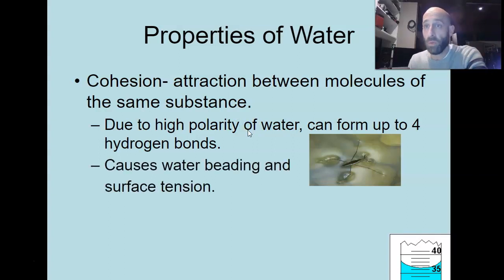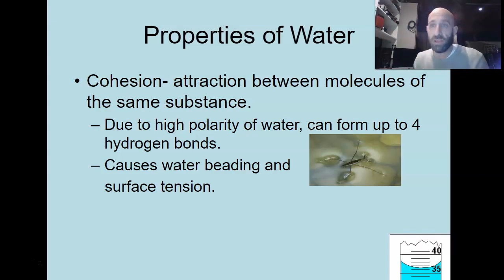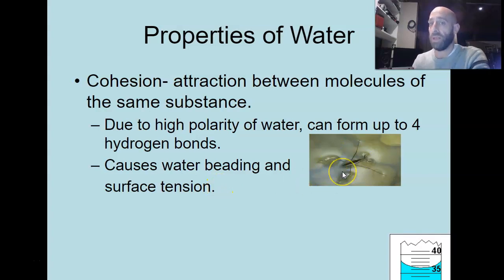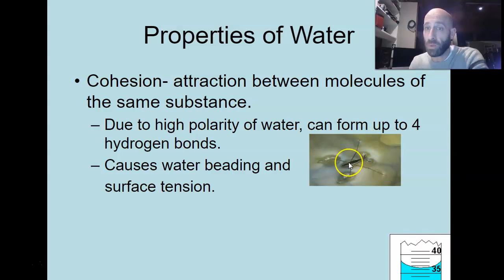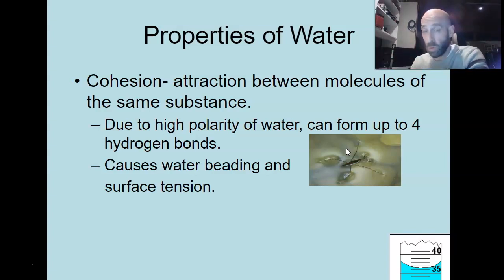Cohesion causes something called water beading — when water attracts to other water molecules. If you drop water on your counter, it doesn't just splash all over the place; it starts to attract to itself and forms little water beads. Cohesion also causes something called surface tension. You can see here a water boatman, a kind of insect — some organisms can walk on water. We can't, because our surface area is too small for how much we weigh. But this insect spreads its legs far enough apart to spread out its surface area. Because that water is attracted to itself so strongly and there's no water above it, you end up with surface tension — water at the surface will actually have a little resistance to it.